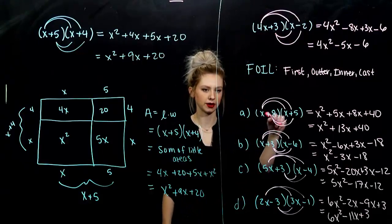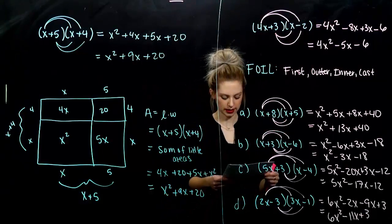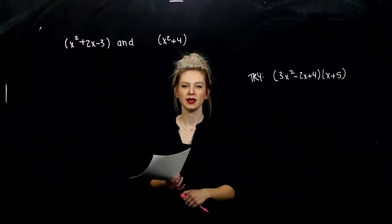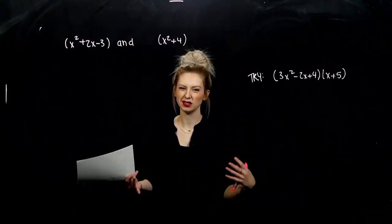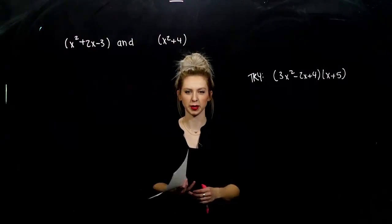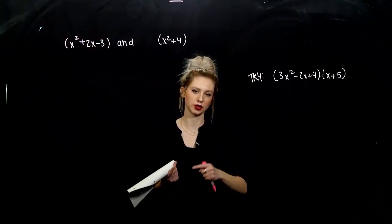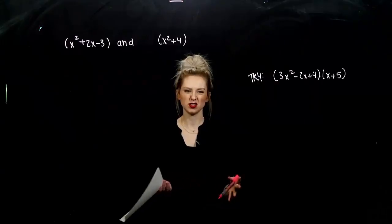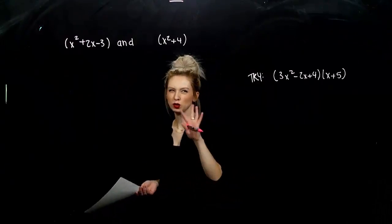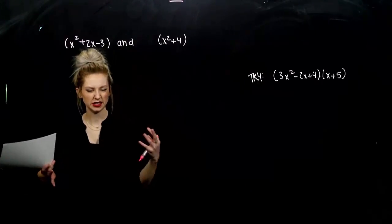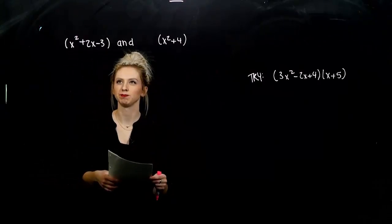So, if you stick to the same pattern every single time by foiling, you're less likely to make mistakes. Anything larger than a binomial still behaves the same when we're multiplying. Every single term of the first has to hit every single term of the second one. But, they're just more time consuming. So, we'll look at a few examples.